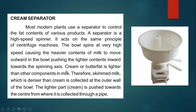Cream and butter fat are lighter than other components of milk. The denser constituents move away from the center and are collected at the outer wall of the bowl. The lighter part — cream and butter — which is close to the center, is collected and removed through a pipe near the center. This is basically how the cream separator works.